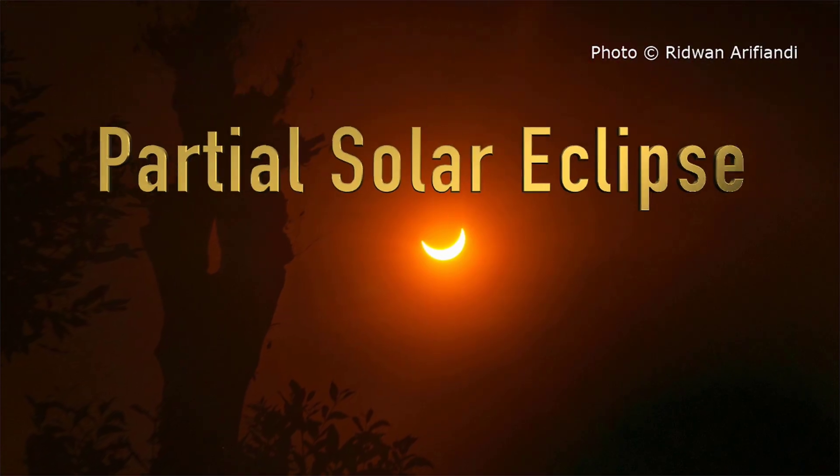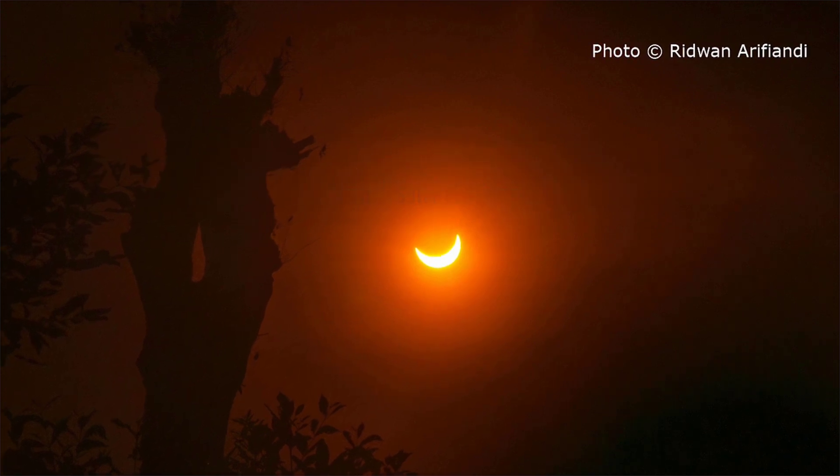The third type of solar eclipse is a partial eclipse, which occurs when the moon passes in front of the sun, but it's off-center, so only a portion of the sun's disk is obscured. Lastly, there are also hybrid eclipses, which are a combination of total and annular eclipses, where the eclipse starts as one and ends as the other.